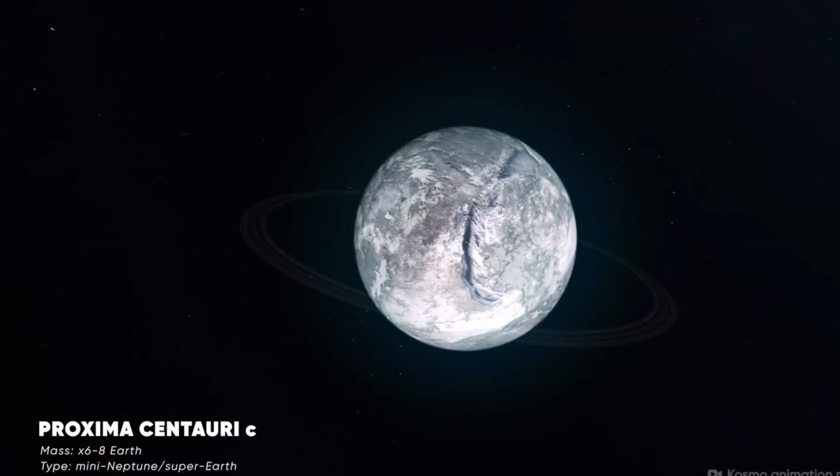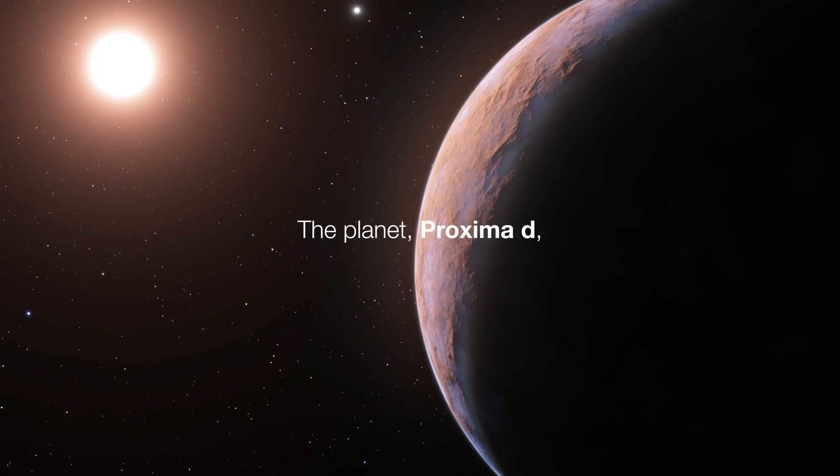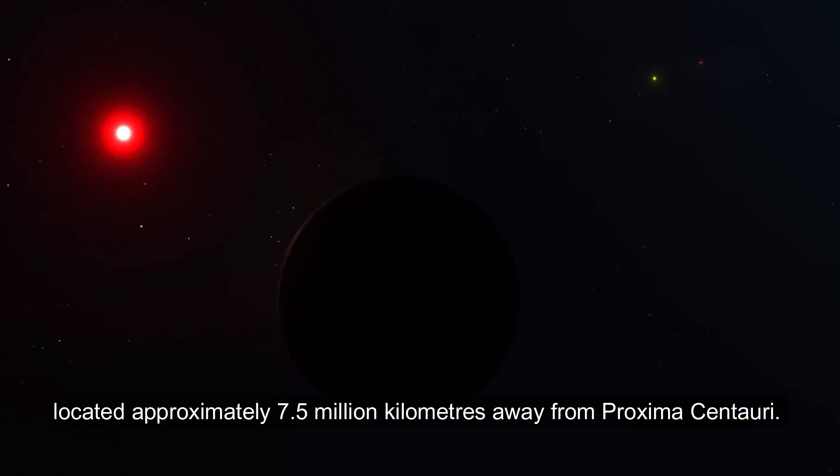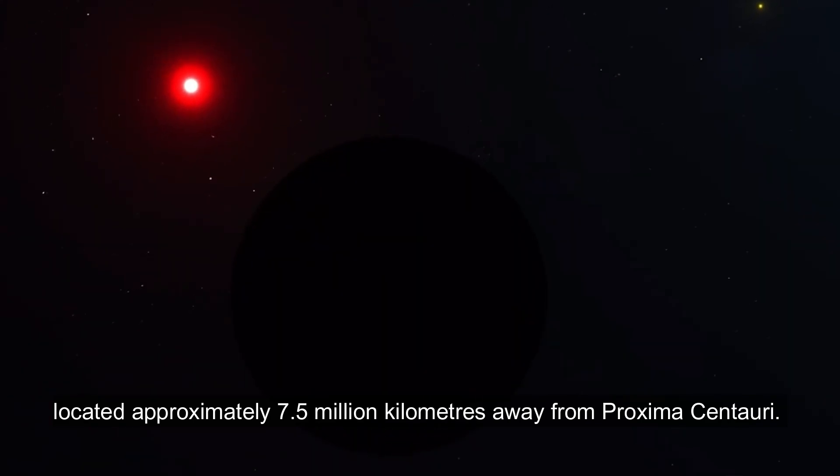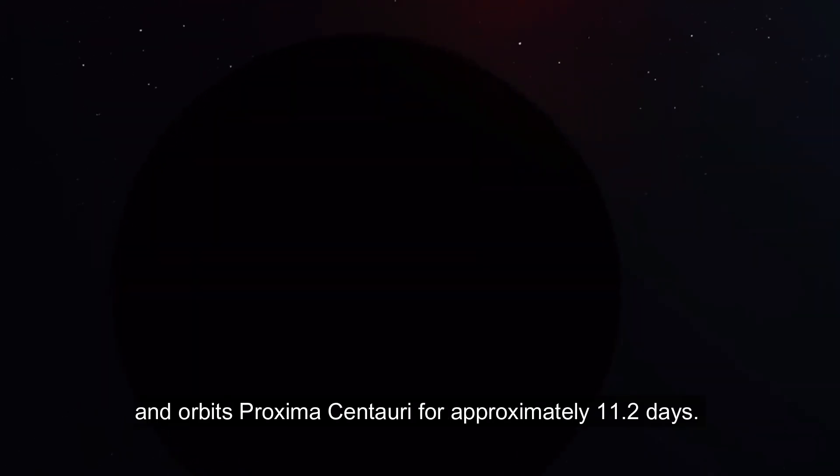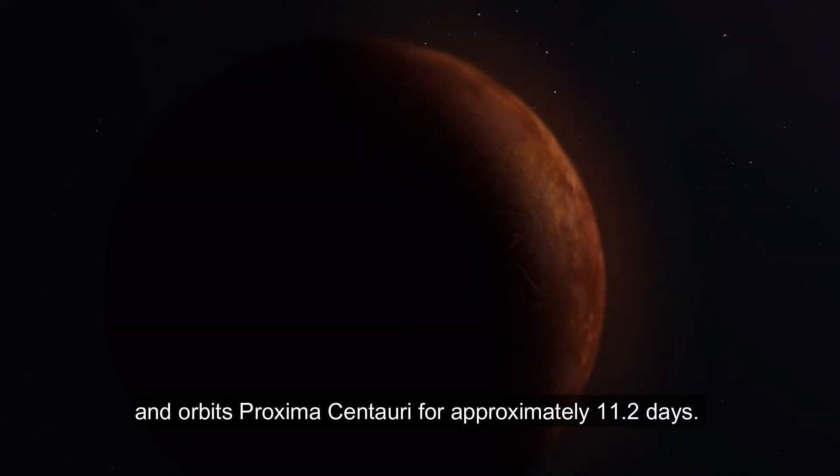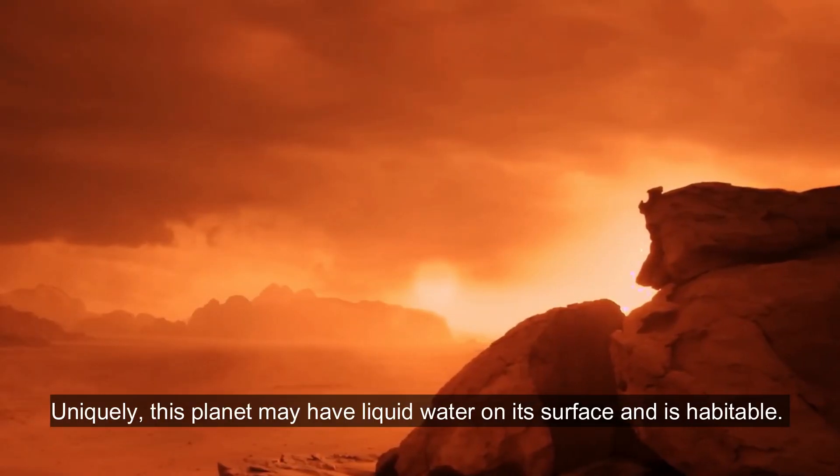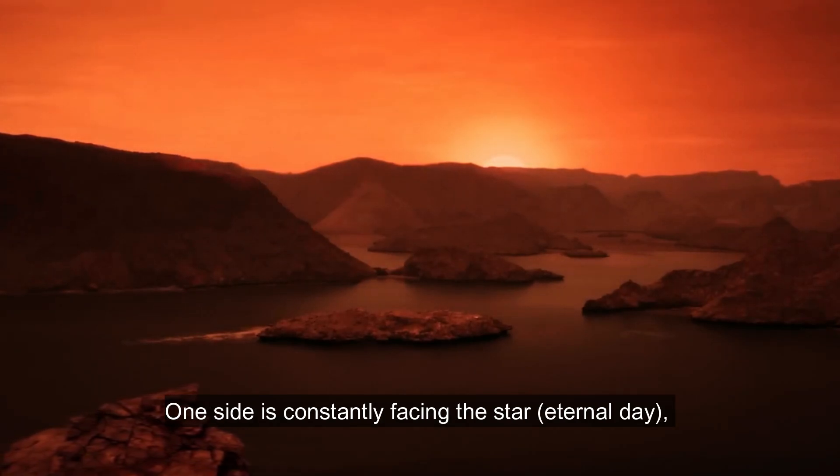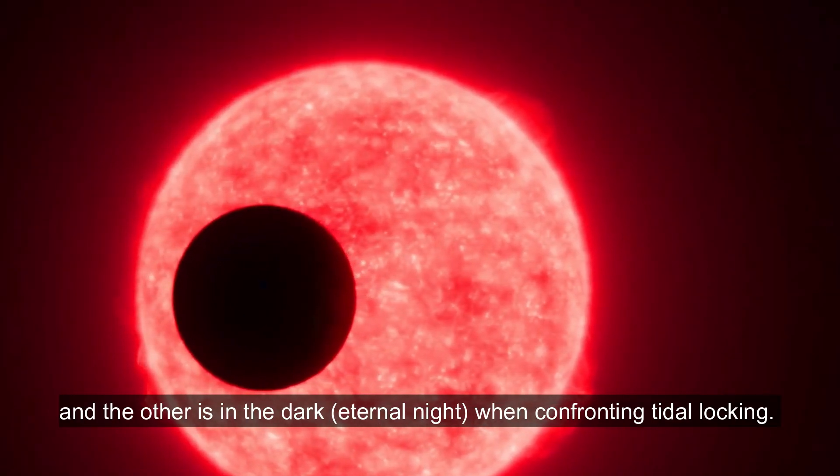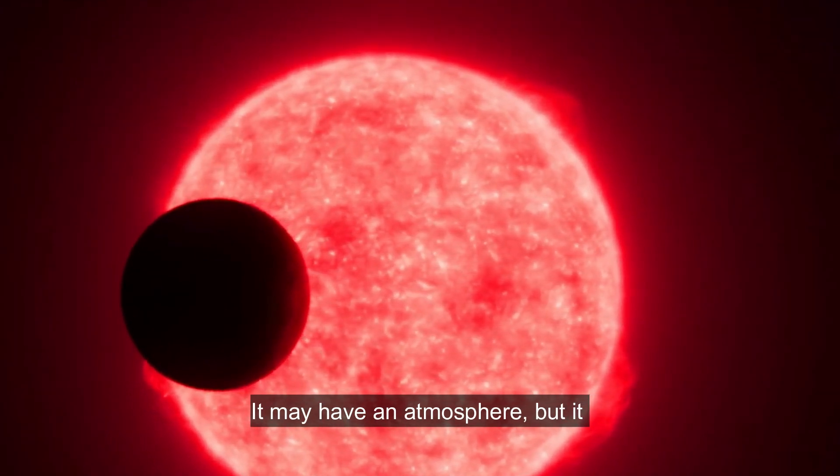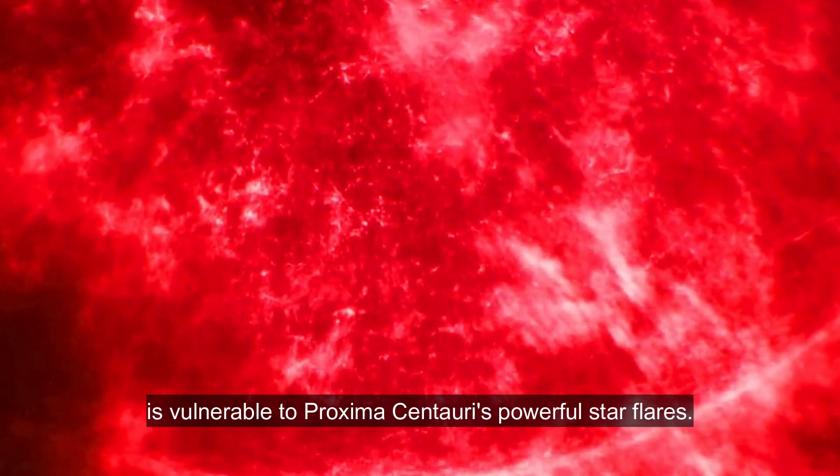The following are Proxima B, C, and D. Proxima B is a rocky planet similar to Earth, located approximately 7.5 million kilometers away from Proxima Centauri. It has a mass 1.17 times that of Earth and orbits Proxima Centauri for approximately 11.2 days. Uniquely, this planet may have liquid water on its surface and is habitable. One side is constantly facing the star, eternal day, and the other is in the dark, eternal night, when confronting tidal locking. It may have an atmosphere, but it is vulnerable to Proxima Centauri's powerful stellar flares.